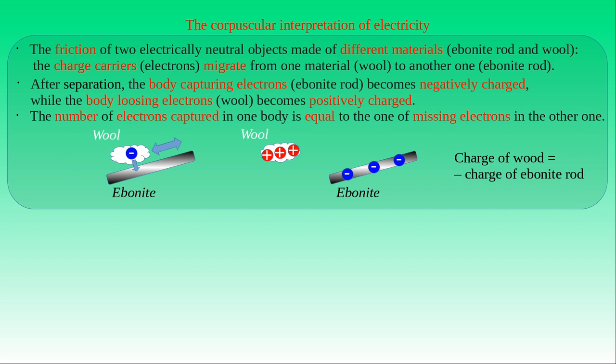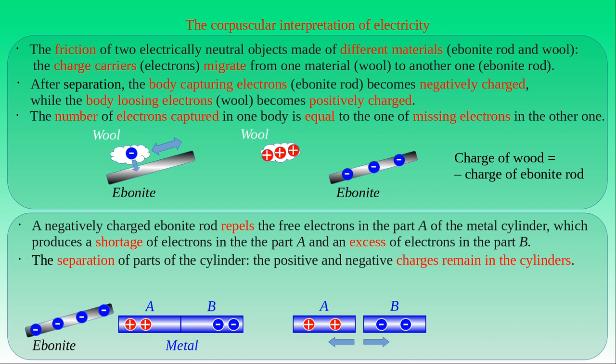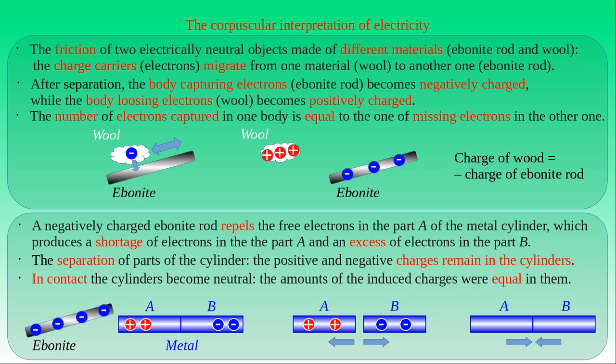In the experiment with the metal cylinders, we brought a negatively charged ebonite rod near cylinder A. The corpuscular explanation of the separation of charge is as follows: the negatively charged ebonite rod repels the free electrons in cylinder A, which results in a shortage of electrons in it. At the same time, there is an excess of electrons in cylinder B, since it is in contact with cylinder A. As a result, cylinders A and B attain positive and negative charges respectively. If we separate the two cylinders, the positive charge remains in cylinder A and the negative one remains in cylinder B — that is, we have induced charges in the cylinders. If we bring the cylinders into contact again, they become electrically neutral, showing that the two cylinders have the same amount of induced charge.